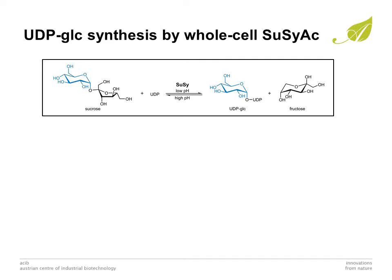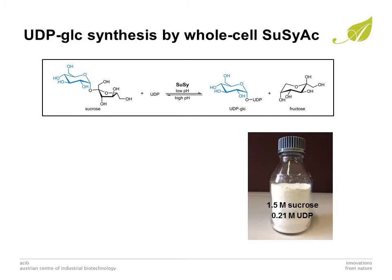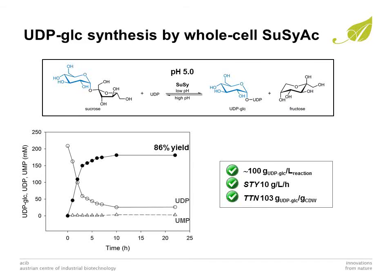In the next step, we applied the whole cell SuSy AC to the synthesis of UDP-Glucose from sucrose and UDP. A 7-fold molar excess of sucrose was used to maximize the utilization of UDP in the equilibrium-controlled reaction of the SuSy. And for high conversion, pH control at 5 was crucial. The UDP-Glucose production had excellent performance metrics of 100 g of product per liter, 86% yield based on UDP, and a total turnover number of 103 g of UDP-Glucose per gram cell dry weight at a space-time yield of 10 g per liter per hour.